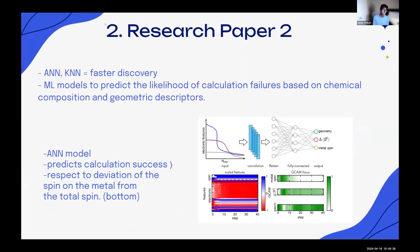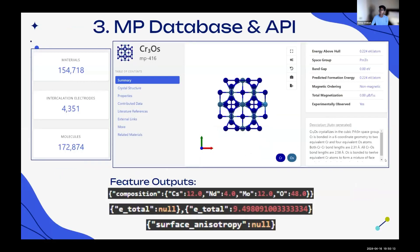ANNs, or artificial neural networks, and k-nearest neighbors are used for faster discovery. These machine learning models can predict the likelihood of calculation failures based on chemical composition and geometric descriptors. After the literature review, we examined the materials project database and API. The materials project database is a comprehensive database with over 150,000 materials, over 4,000 intercalation electrodes, and over 170,000 molecules, making it very comprehensive with a lot of good data that could be used in research.